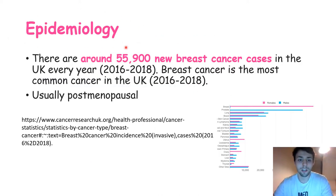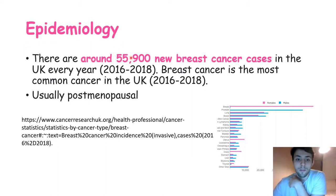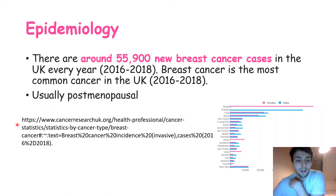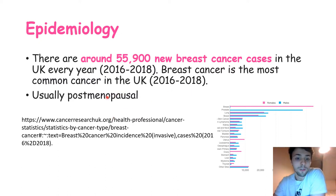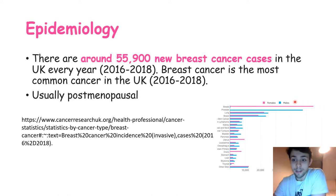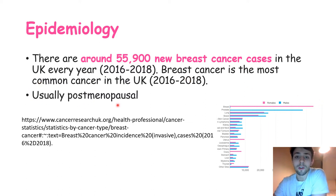Now let's talk about epidemiology. Breast cancer is very prevalent — there are around 55,900 new cases in the UK every year, according to Cancer Research UK. They also state that breast cancer is the most common cancer in the UK. Looking at their graph, breast cancer is almost entirely seen in women, specifically post-menopausal females, making it a very important disease.